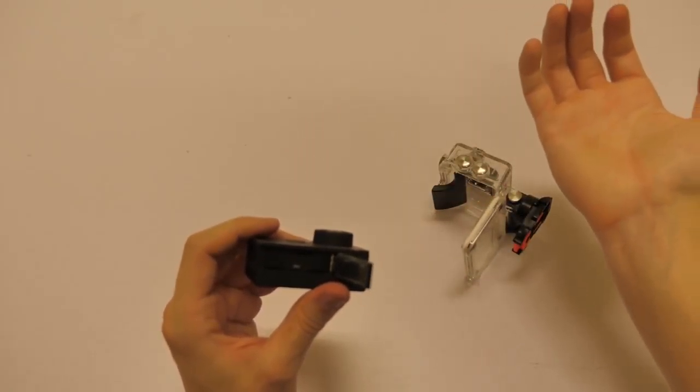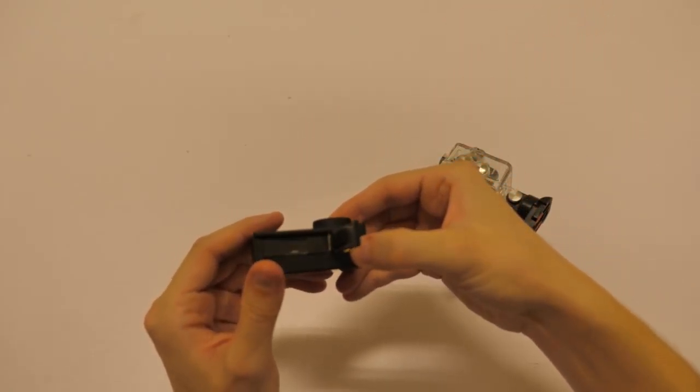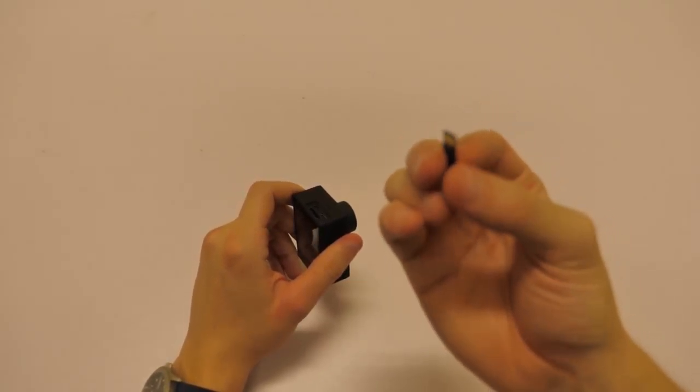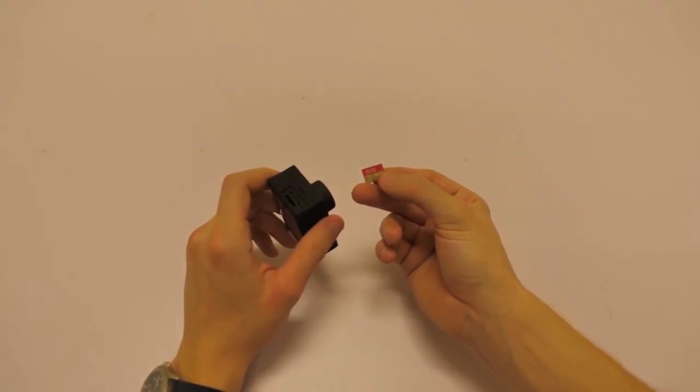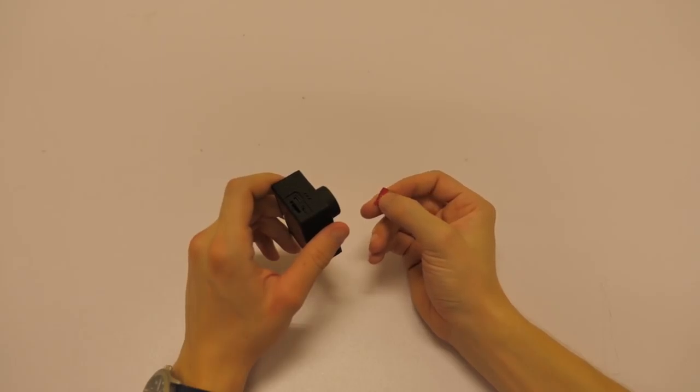Then along the bottom we have the quarter inch threaded insert. Just beside that is the housing for the battery. You can see I've already got one in here, so all I need to do now is slot in a little micro SD card.